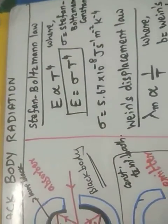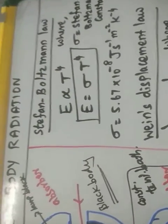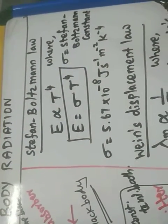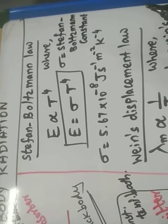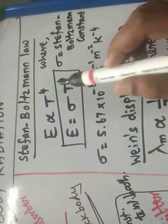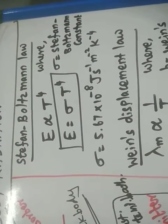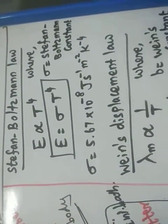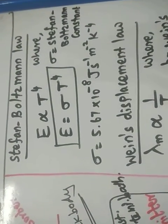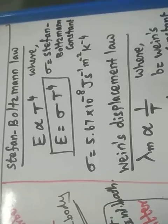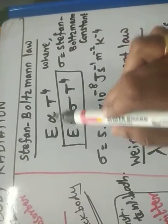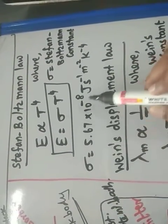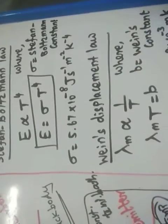Now we can see Stefan-Boltzmann's law. This law states that the total heat energy E emitted by a perfect black body per second per unit area is directly proportional to the fourth power of the absolute temperature of the surface. That constant is called the Stefan-Boltzmann constant, and its value is 5.67 × 10⁻⁸ J·s⁻¹·m⁻²·K⁻⁴.